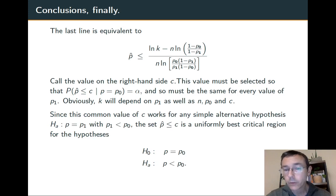This value of c is going to work for any simple alternative hypothesis p = p₁ as long as p₁ is less than p₀. And therefore this set p̂ ≤ c is a uniformly best critical region for the alternative hypothesis p < p₀.